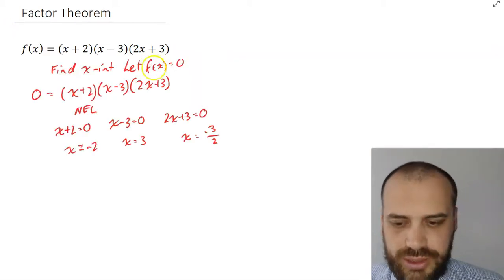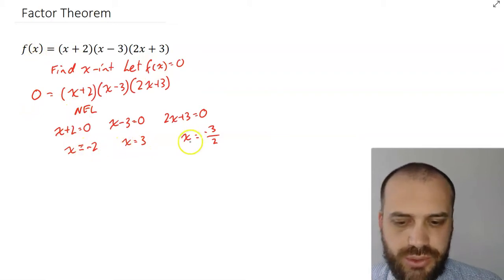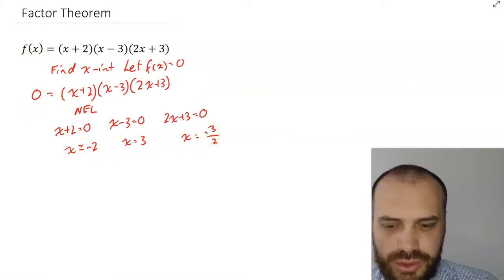If you wanted to find the x-intercepts, you let the function equal 0, and then you use the null factor law to find out that x equals negative 2, x equals 3, or x equals negative 3 over 2.